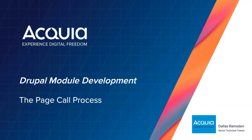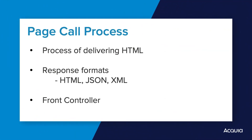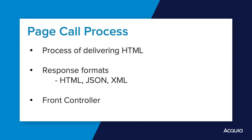Welcome back. Let's learn about Drupal's page call process and the code of Drupal required to achieve this. The page call process details what Drupal goes through to deliver the HTML you see in your browser. It starts when the server running Drupal receives a request from a client, such as a browser, all the way through to that server returning Drupal's response.